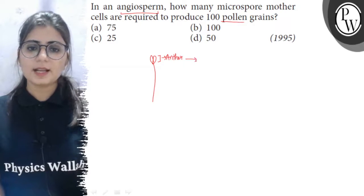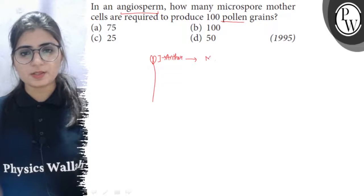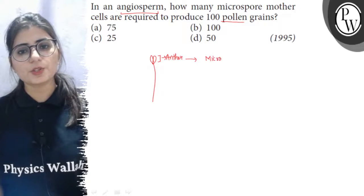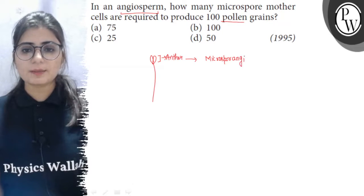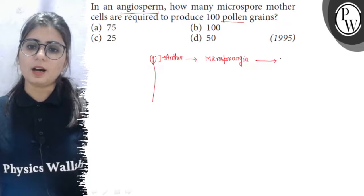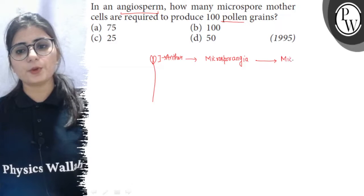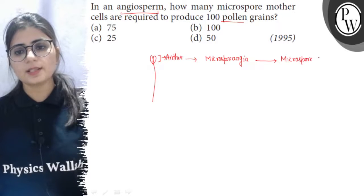Inside anther, there are special pouches which are called microsporangia where microspores are produced and these microsporangia are having microspore mother cells which are diploid cells.